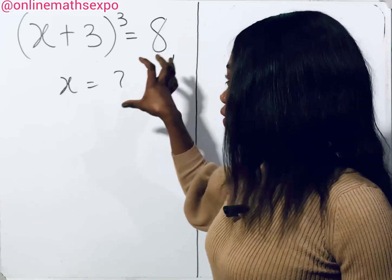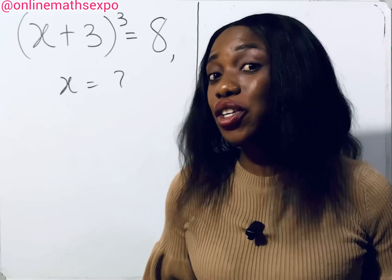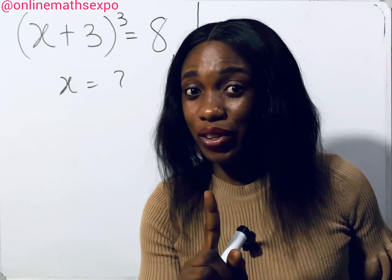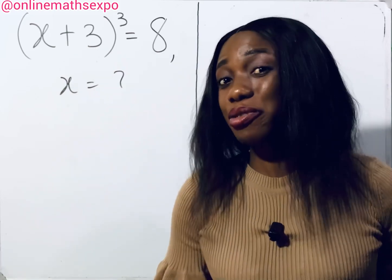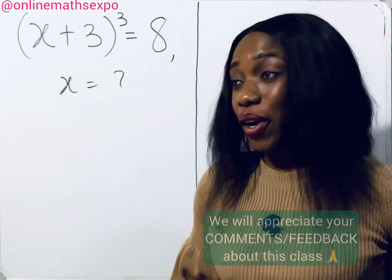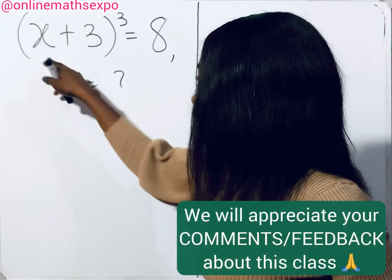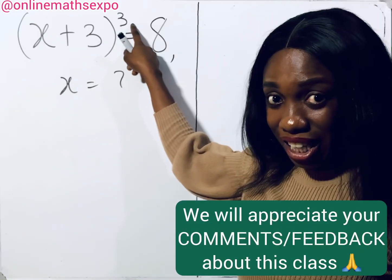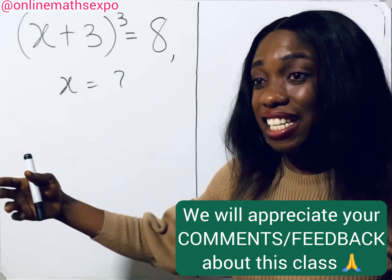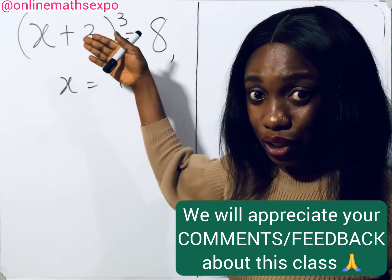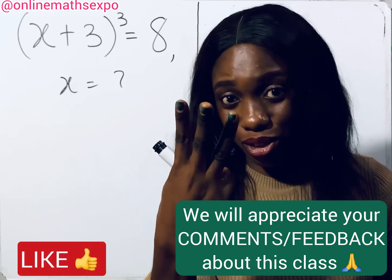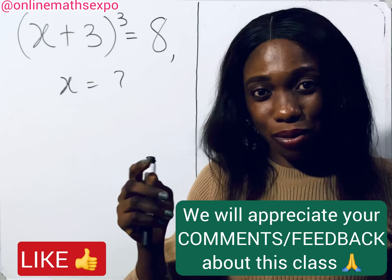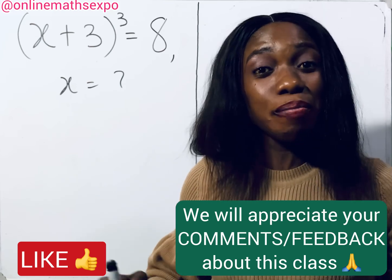Welcome, and let's solve this Cambridge University interview test together. It's simple but tricky. I know you already have your value of x by inspection, but don't be too fast to make a conclusion, because you observe that what you have here is raised to the power of three. This leads us to a cubic equation, meaning we are expected to have three values of x — so that solution you have in mind is not yet the complete solution.